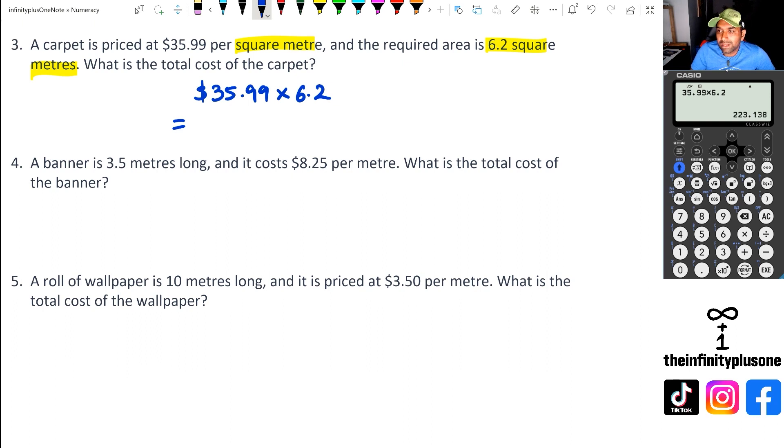Particularly in context, right? Like in this one, we can't actually put it as $223.138. It doesn't work because when it comes to dollars and cents, it's only two decimal places. So we're actually going to round up this number in this case because of that 8. So we're going to rewrite this as $223.14.